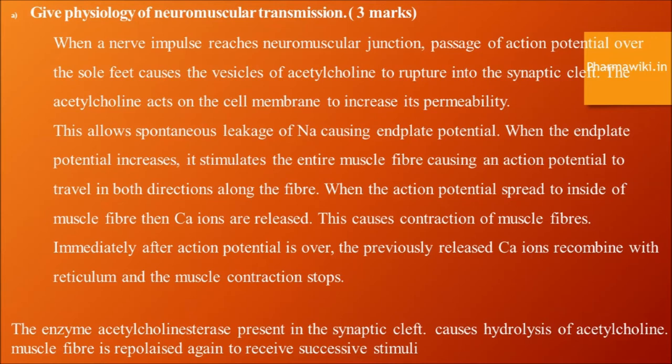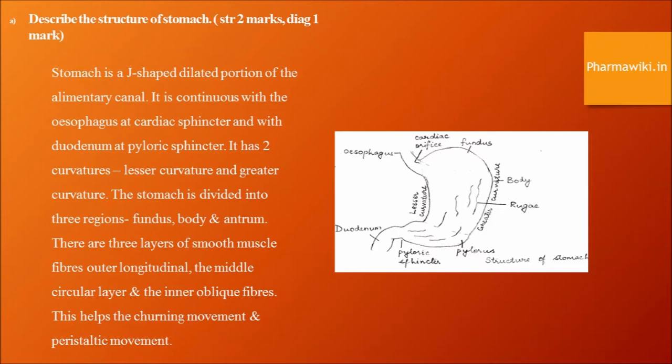Structure of the stomach. The stomach is a J-shaped dilated portion of the alimentary canal. It is continuous with the esophagus at the cardiac sphincter and with the duodenum at the pyloric sphincter. It has two curvatures: lesser curvature and greater curvature. The stomach is divided into three regions: fundus, body, and antrum. There are three layers of smooth muscle fibers: outer longitudinal, middle circular, and inner oblique fibers. This helps in churning and peristaltic movements. You need to learn the diagram of the stomach before your examination.